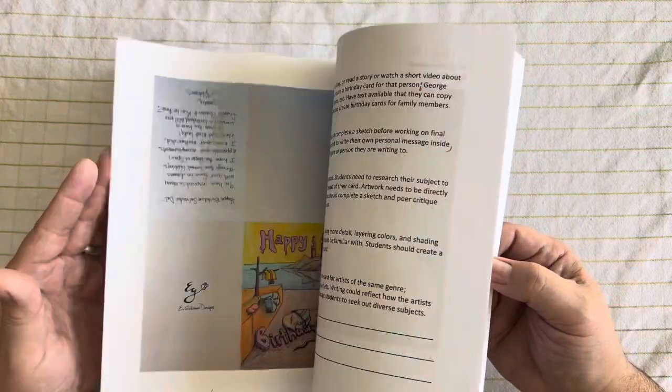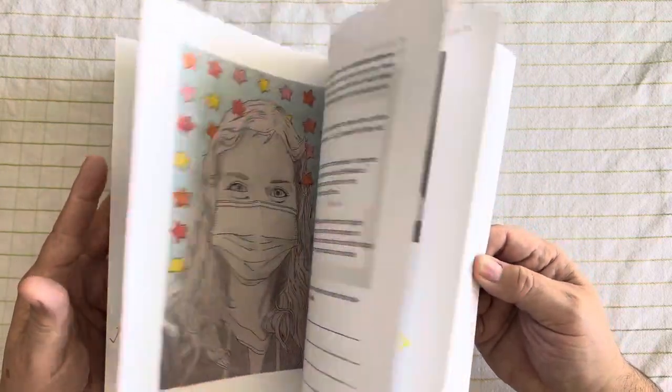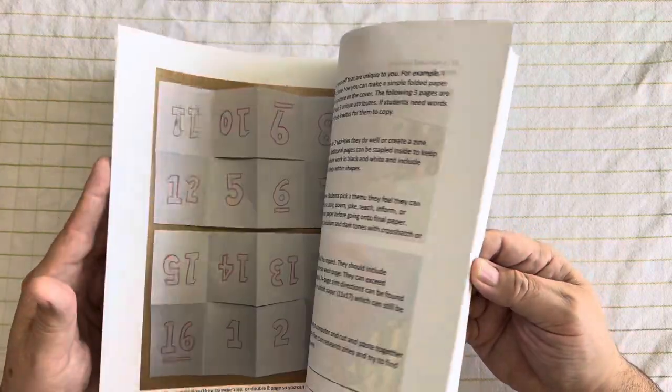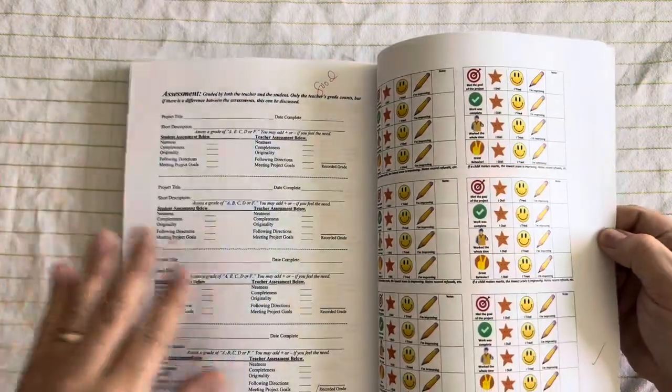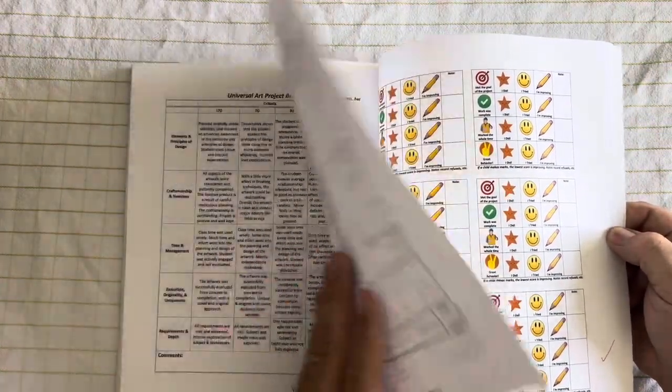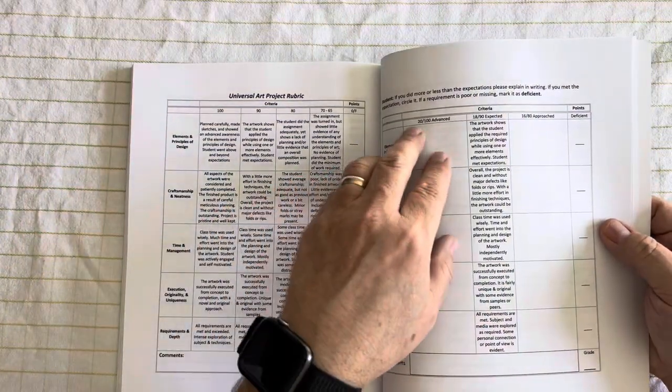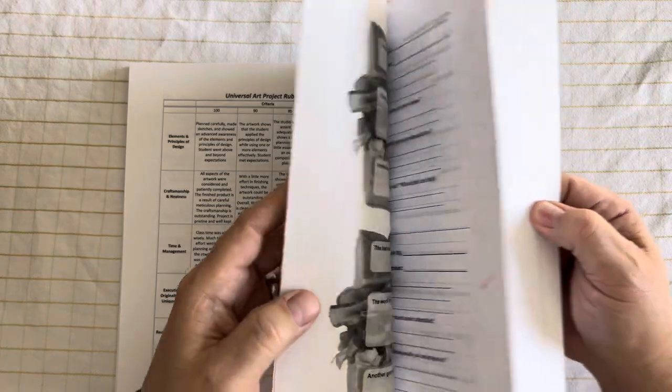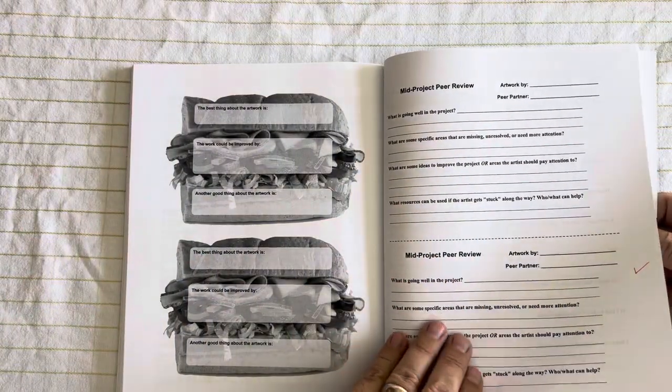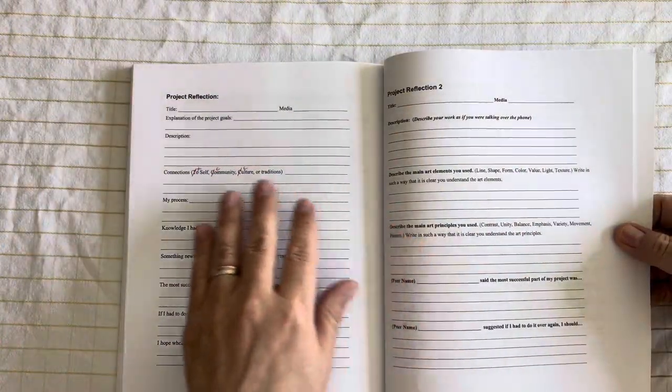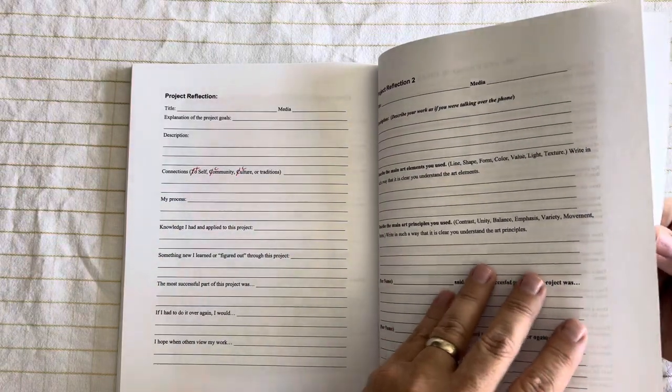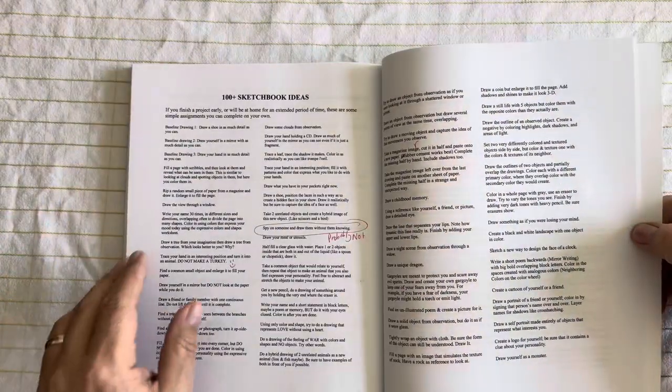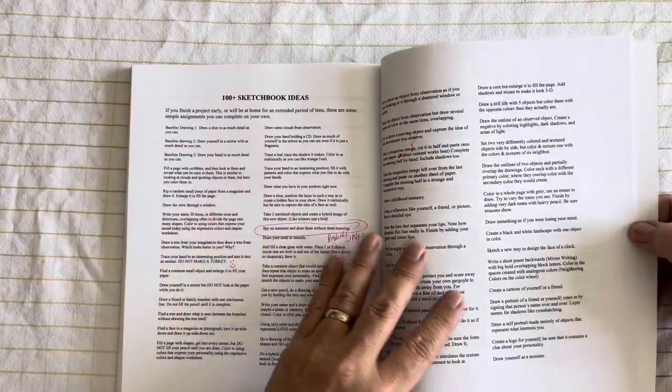And then in the back of the book we have some grading rubrics available to you. So we've got lower elementary grading rubrics. A simple rubric. More complex rubric. Rubrics where the students assess themselves. And then we finish with some mid-project peer reviews. Some project reflections that students can use about their work.